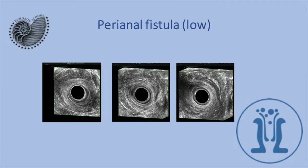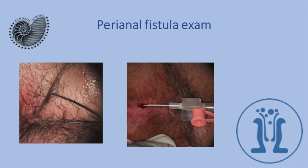Here we see an anal fistula in the internal anterior position with hydrogen peroxide inside the fistula. Most often we should examine the patient with a probe and hydrogen peroxide injection into the fistula tract.